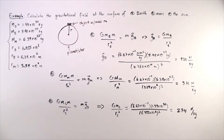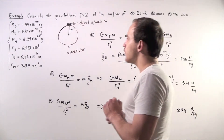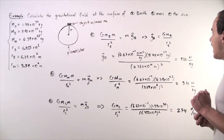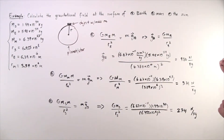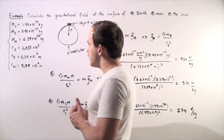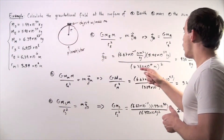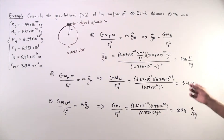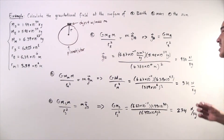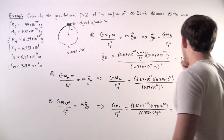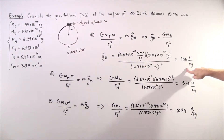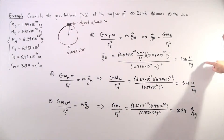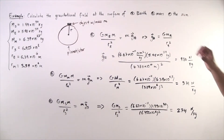We plug in our values: 6.67 × 10⁻¹¹ multiplied by the mass of Earth, 5.98 × 10²⁴ kg, divided by the radius of the Earth, 6.380 × 10⁶ meters, squared. We get 9.8 meters per second squared. Because we're asking for the gravitational field, the units are newtons per kilogram, which is equivalent to meters per second squared. This is our gravitational field at the surface of the Earth.